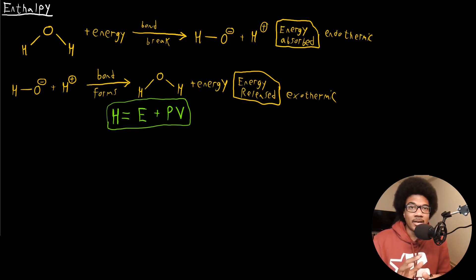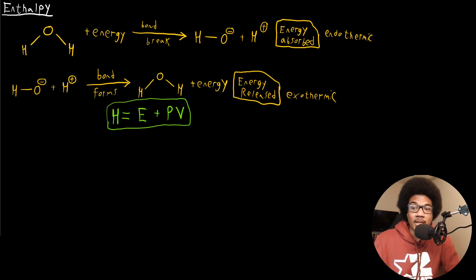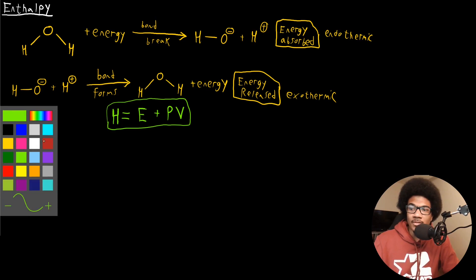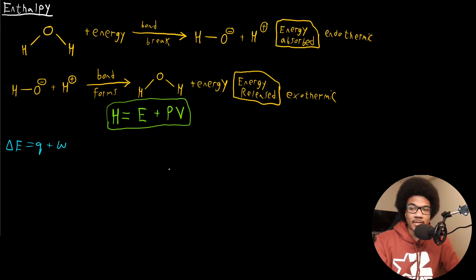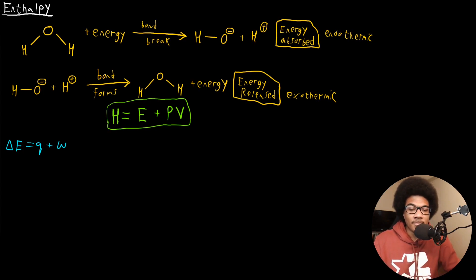I want to make an analogy with the first law of thermodynamics so that we can understand enthalpy on a deeper level. Starting from the first law of thermodynamics, we know that Delta E is equal to Q plus W. Now, if we're dealing with a pressure-volume process — PV work — then we can change this to Q minus P Delta V.